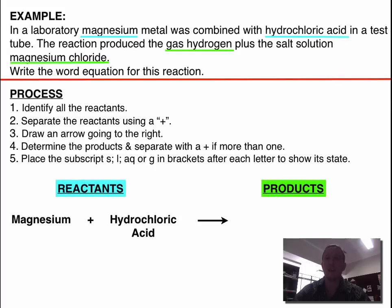Then an arrow, which shows that when these combine, they produce, and the products are hydrogen and magnesium chloride, and then we put a plus between them, because there's more than one.